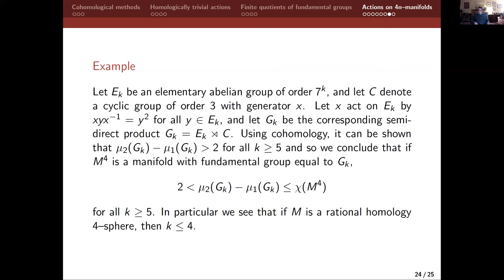And we conclude that if you have a four-manifold with fundamental group equal to G_K, then two is strictly less than mu_2 of G_K minus mu_1 of G_K, which is less than or equal to the Euler characteristic, and two is bigger than or equal to E_2 of G_K. This is an example where you can't use just the module with trivial coefficients. What you conclude from this is that if M is a rational homology four-sphere with fundamental group G_K, then K is less than or equal to four.